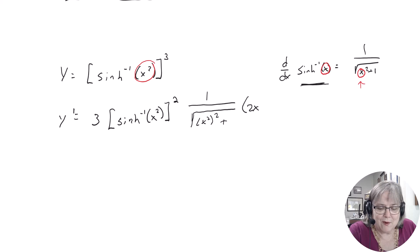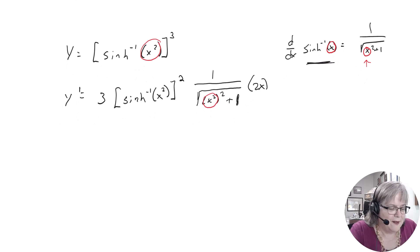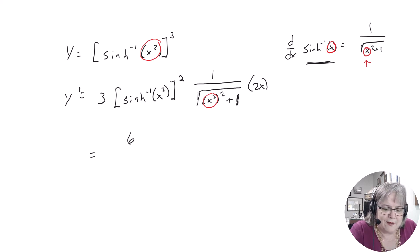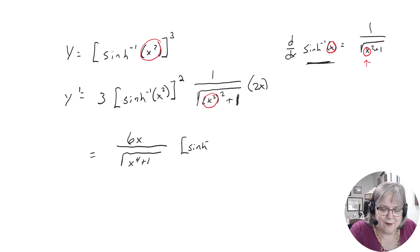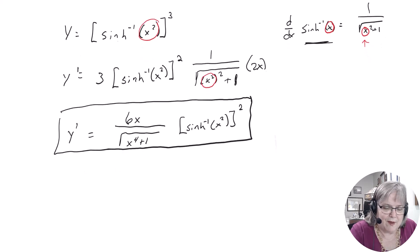The power rule brings the 3 down, leaves the inside alone, takes one off the power, then you loop back in and take the derivative of the inside. When you clean this up, the 3 and the 2x work together to give 6x over the square root of x⁴ plus 1, times the inverse hyperbolic sine of x² squared.